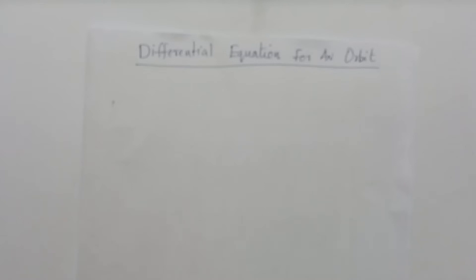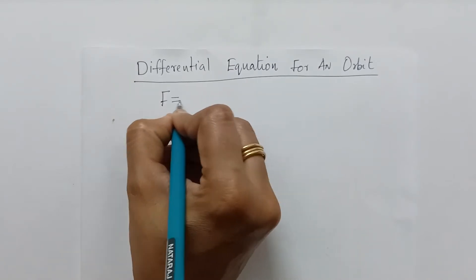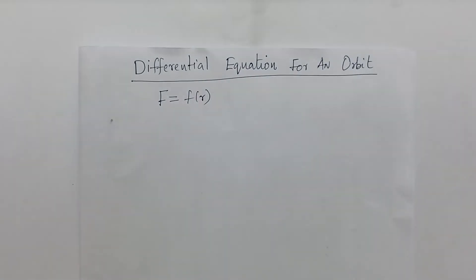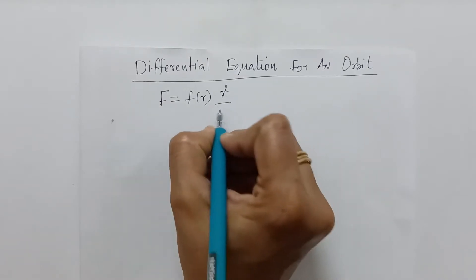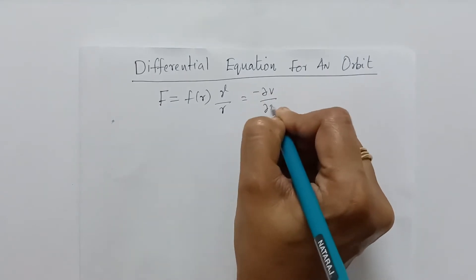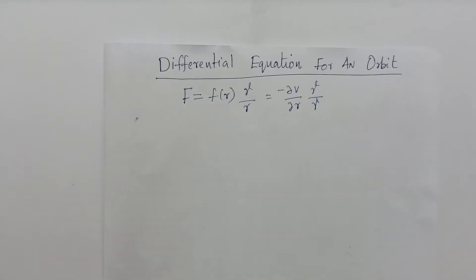In classical mechanics, we were discussing equations of motion under the influence of a central force. The central force, represented by capital F, depends only upon the distance R towards a particular point. We can represent force as minus ∂V/∂R multiplied by R/|R|. From this we started and wrote the Lagrangian.